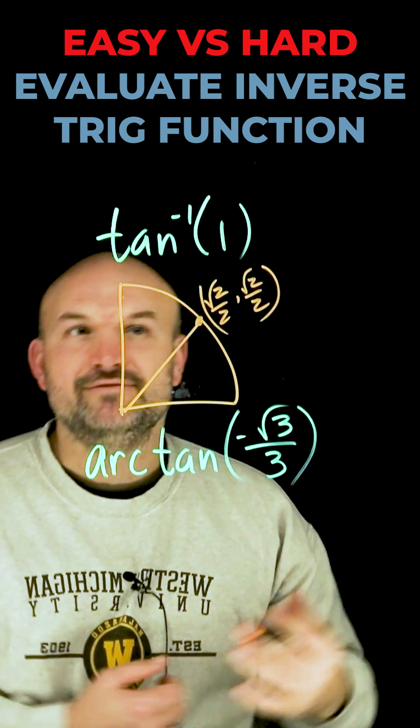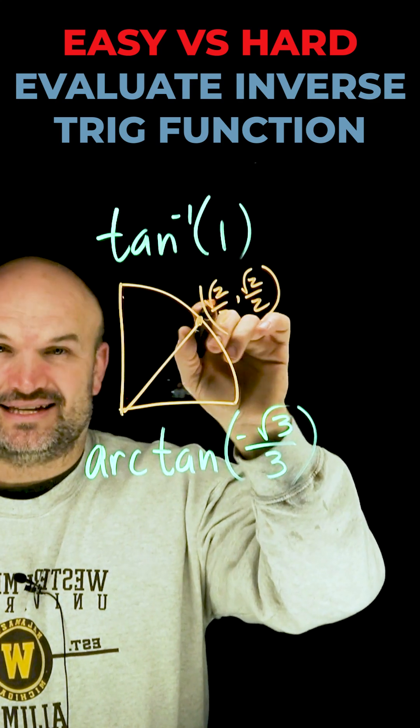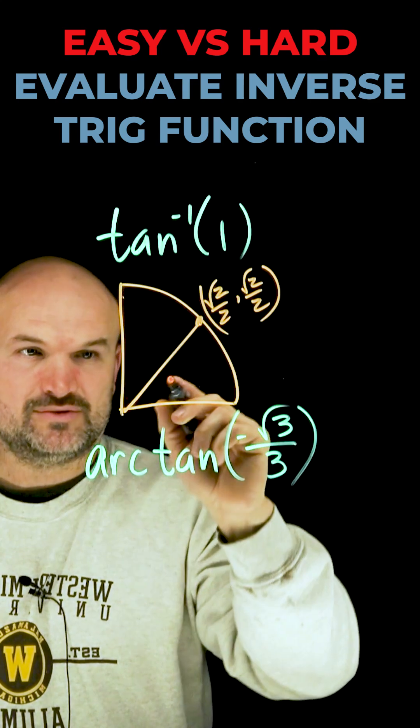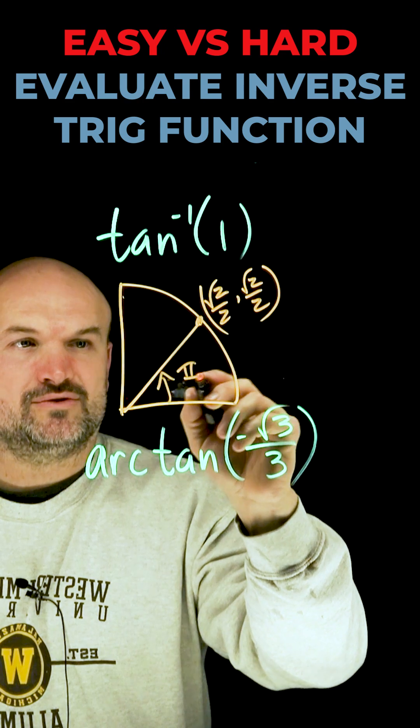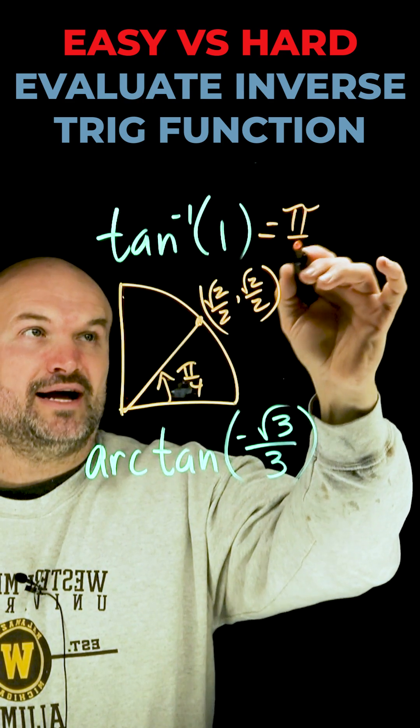Now we're finding the tangent inverse. What we're looking for is the angle that produces that ratio. So if I take the y over the x, since they're exactly the same, it's going to give us 1. The angle that produces that is going to be pi over 4. So the answer for the first example is pi over 4.